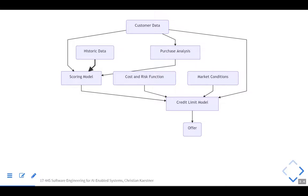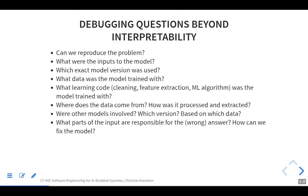You make a prediction and want to know why. You need to know which model was used — these models are potentially updated once a day or once a week. If I want to know where yesterday's prediction came from, I need yesterday's market conditions and other inputs that flow into the system. Can we reproduce the problem? That's highly non-trivial if all the things change all the time.